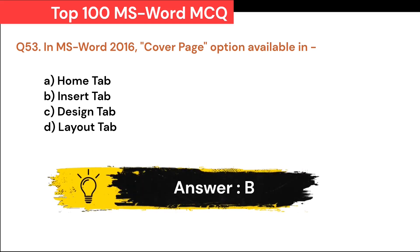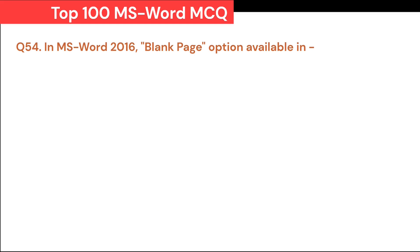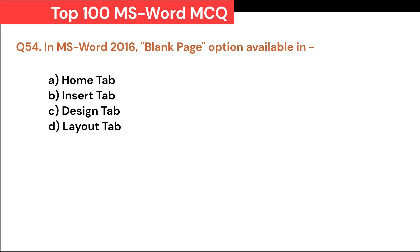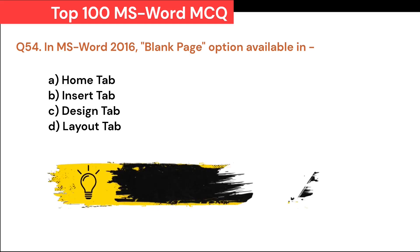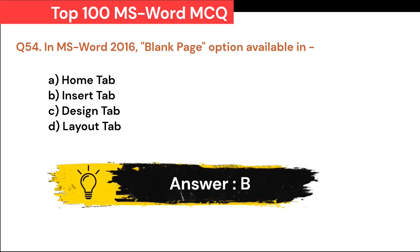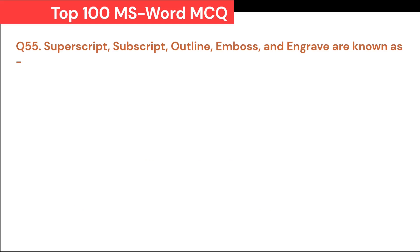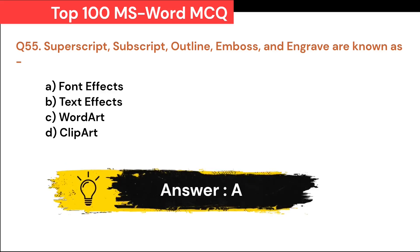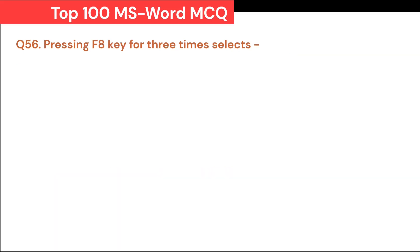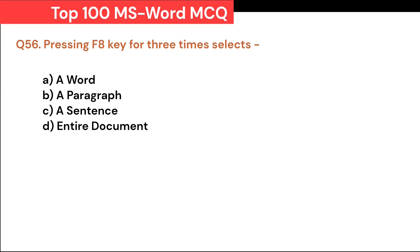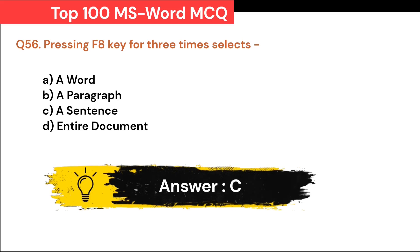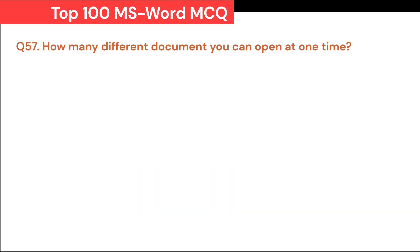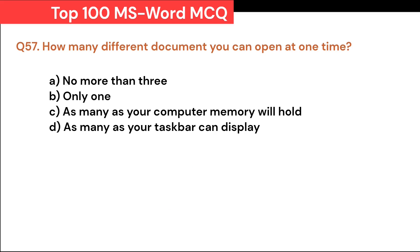In MS Word 2016, blank page option is available in: A. Home tab. B. Insert tab. C. Design tab. D. Layout tab. Correct answer is B. Insert tab. Superscript, subscript, outline, emboss, and engrave are known as: A. Font effects. B. Text effects. C. Word Art. D. Clip Art. Correct answer is A. Font effects. Pressing the F8 key three times selects: A. A word. B. A paragraph. C. A sentence. D. Entire document. Correct answer is C. A sentence.